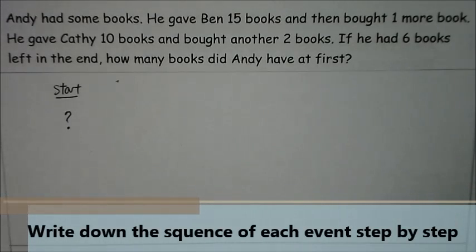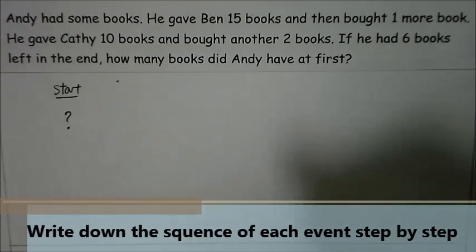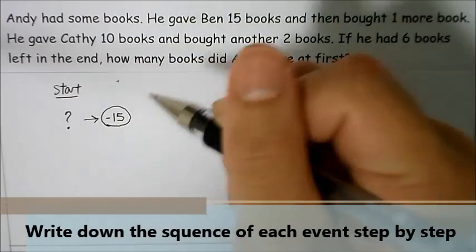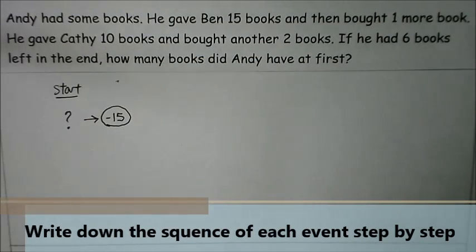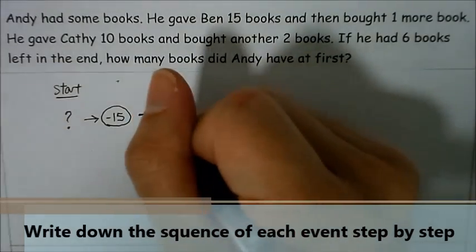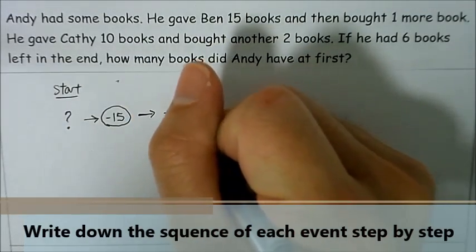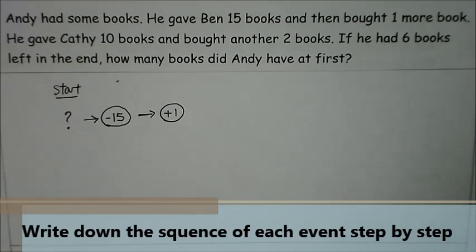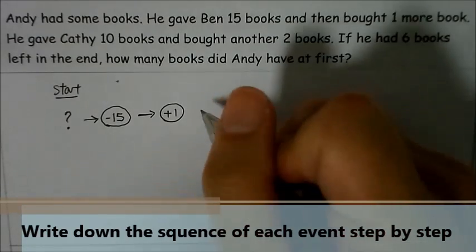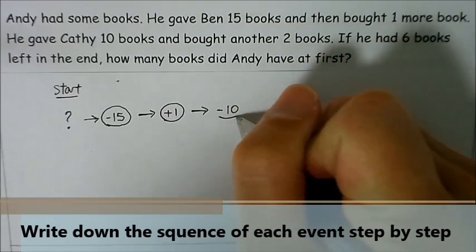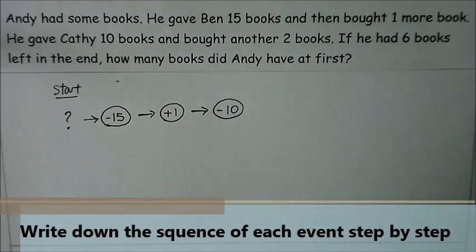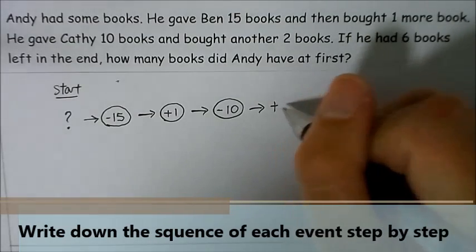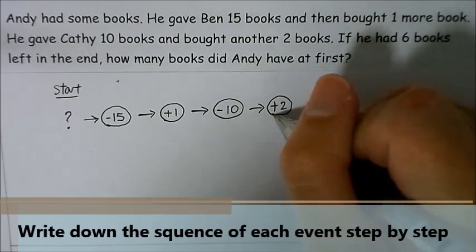He gave Ben 15 books, that means to say this number of books minus 15 which is given to Ben. And then after which Andy bought one more book, that means to say I have to add the one book. After he bought this book, he gave Katie 10 books, that means I have to minus 10. After Andy gave Katie 10 books, he bought another two books, which means to say it would be a plus two that gives us six books in the end.